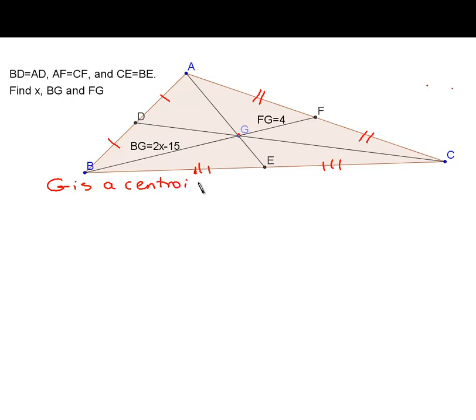And by the centroid theorem, we know that G is two-thirds of the way from B all the way across to F. If BG is two-thirds of the distance, then GF is one-third of the distance. If GF is four, and if GF is a third of BF, maybe we can figure out how long BF and BG must be.